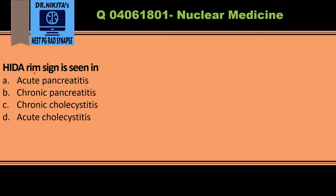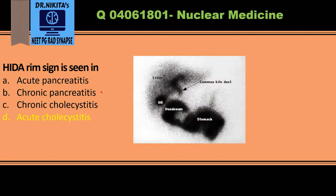The HIDA rim sign is seen in acute cholecystitis. We will see the concept behind the HIDA rim sign and why we see it in acute cholecystitis. This is an image of a normal HIDA scan, which is done for biliary tract or biliary excretion. We can see the gallbladder, the common bile duct, and from the common bile duct the tracer goes into the duodenum, so we see the bowel taking up the tracer.